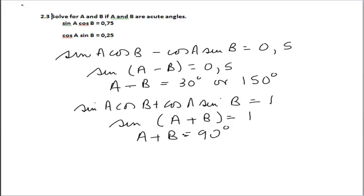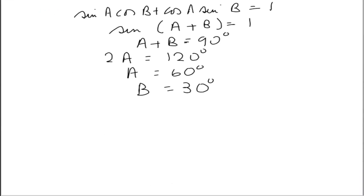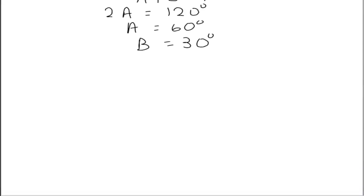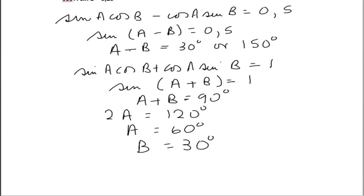Adding the first pair of equations: 2a = 120°, so a = 60°. Then substituting back gives b = 30°. So from the first pair, a = 60° and b = 30°.